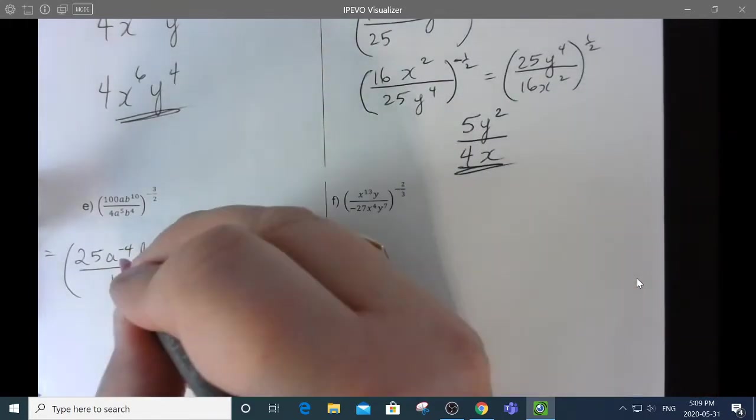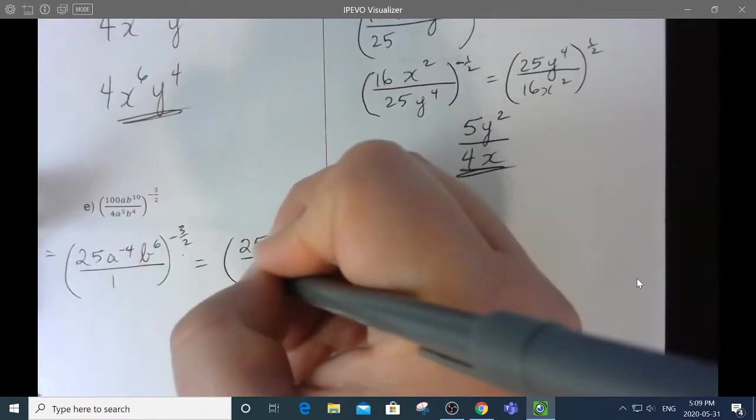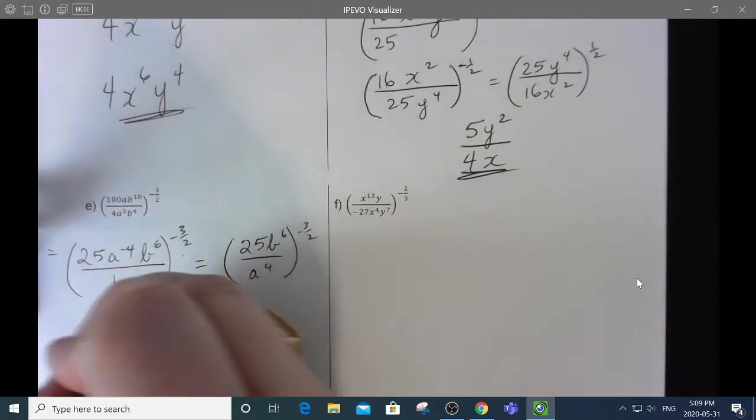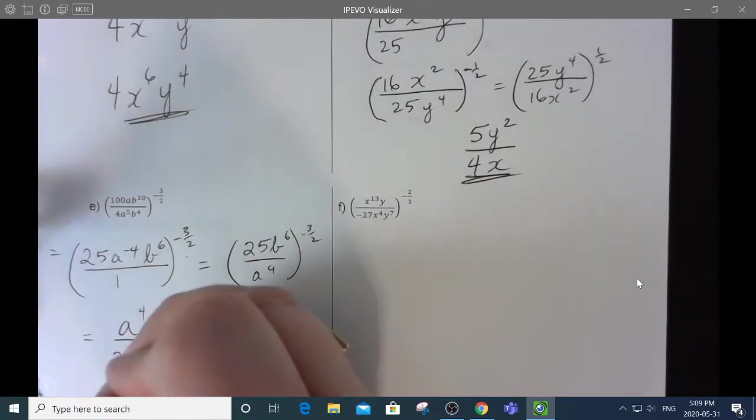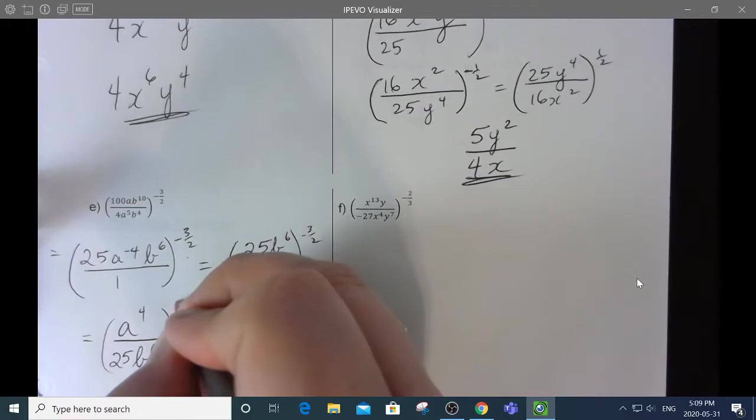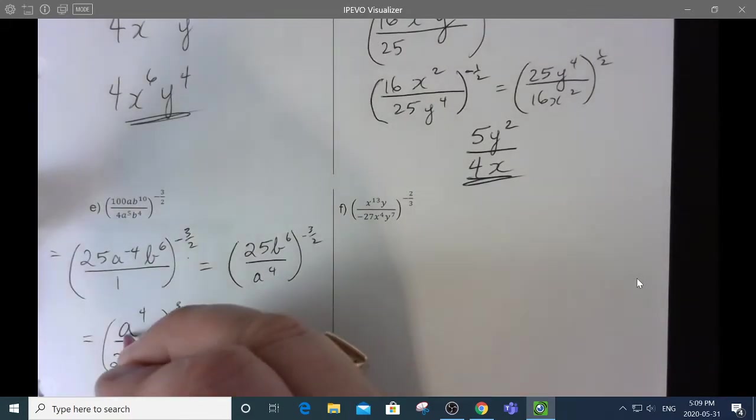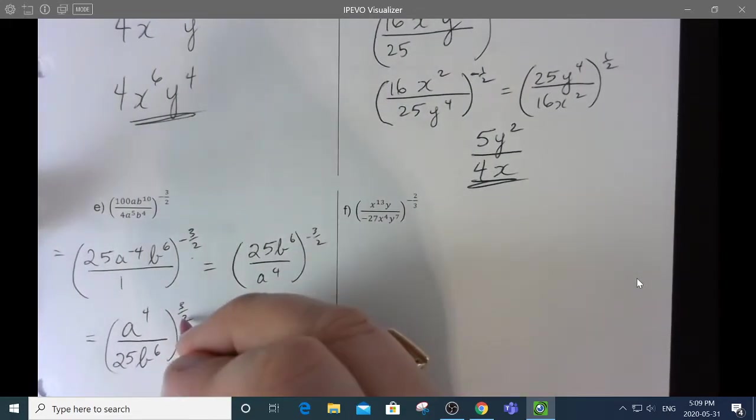On the next step, I'm going to reciprocal the things that have negative powers. On the next step, I'm going to use the negative part of the exponent, which reciprocals everything. So, I now have a to the 4 over 25b to the 6. And now, I am going to use the distributive property that I can use distributing this power through everything in the bracket.